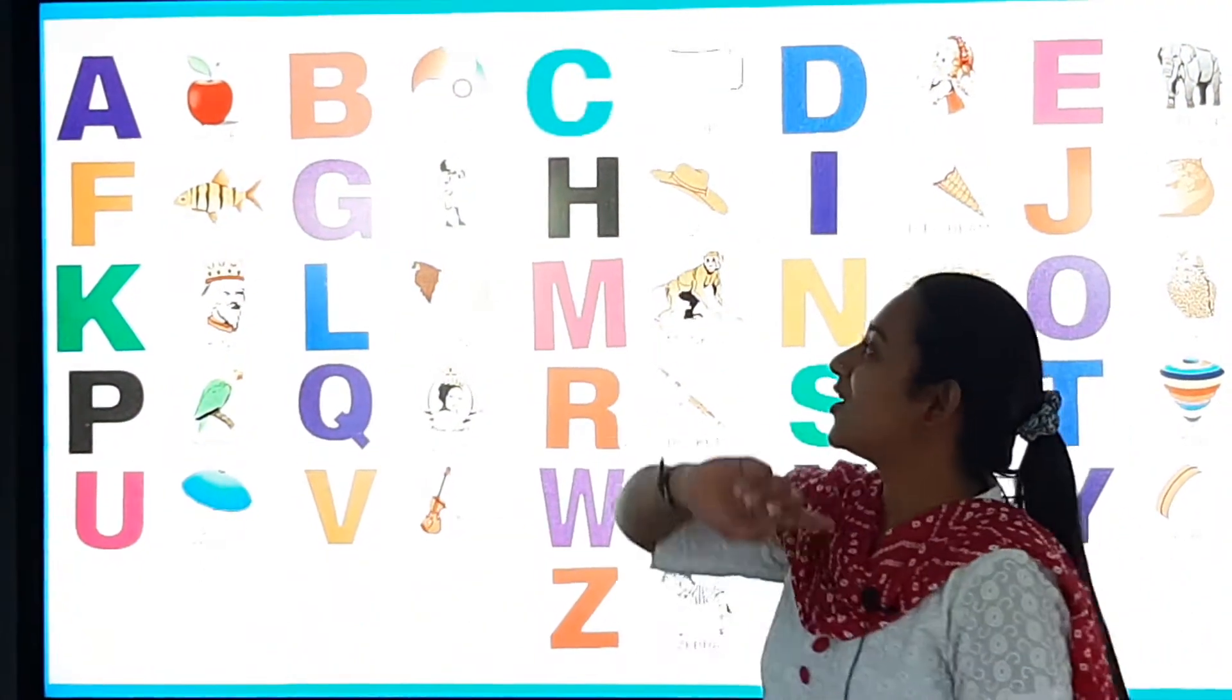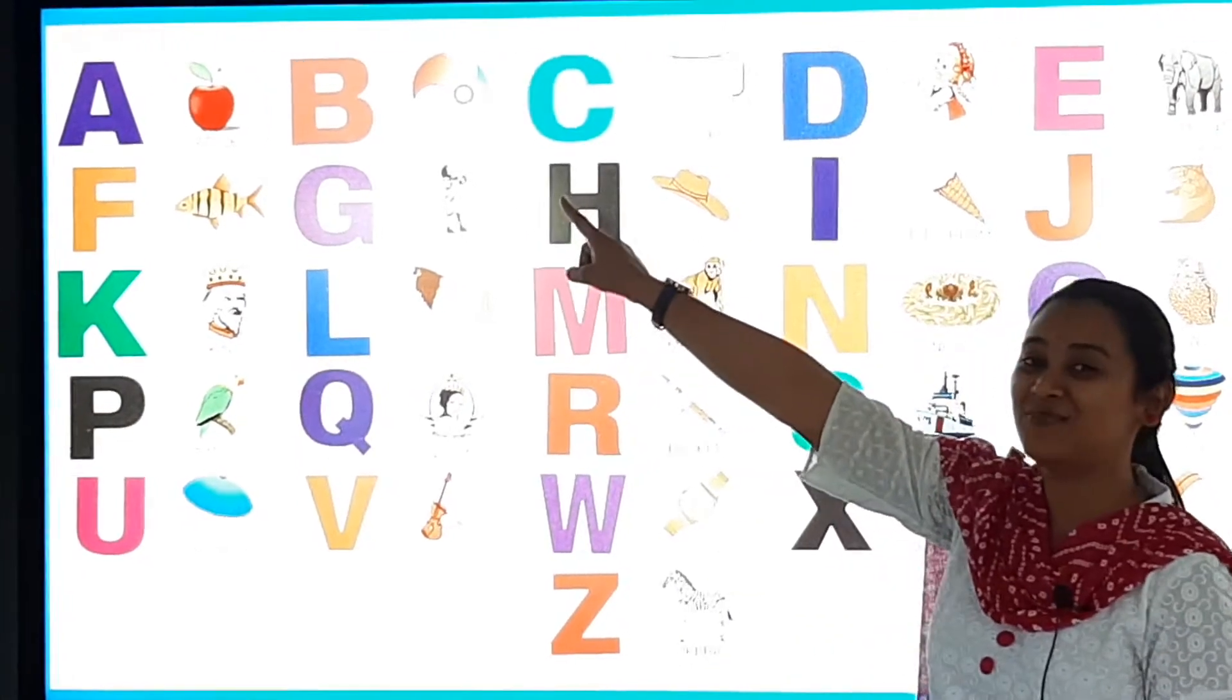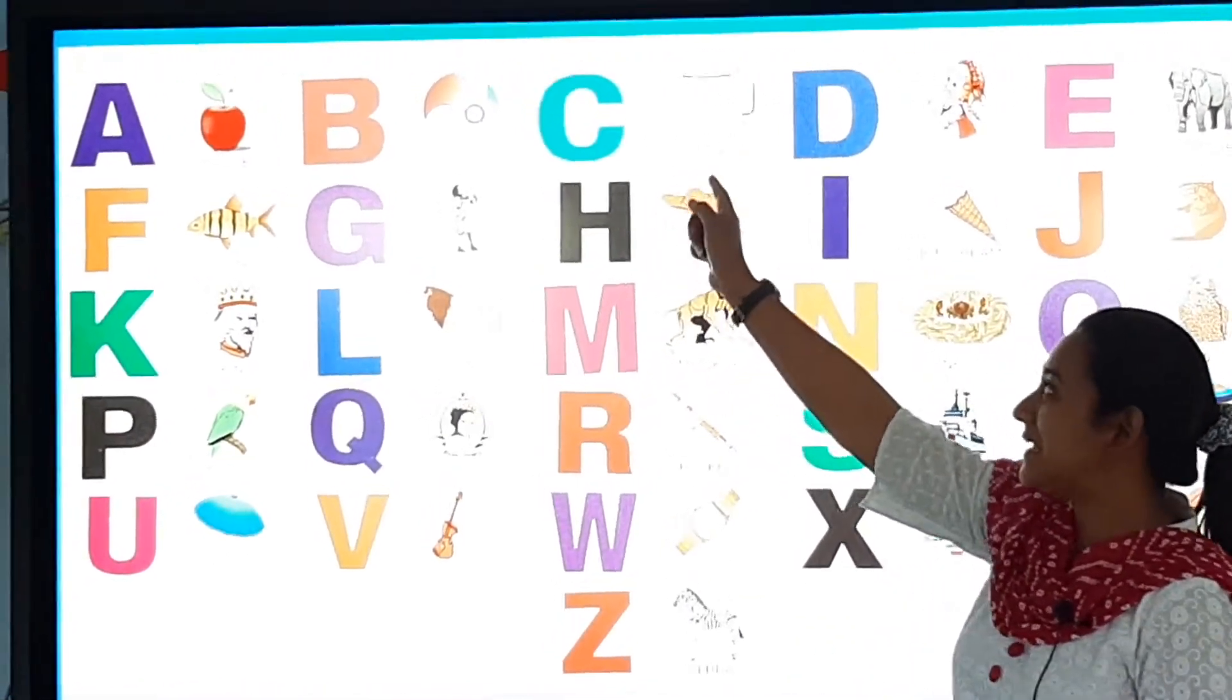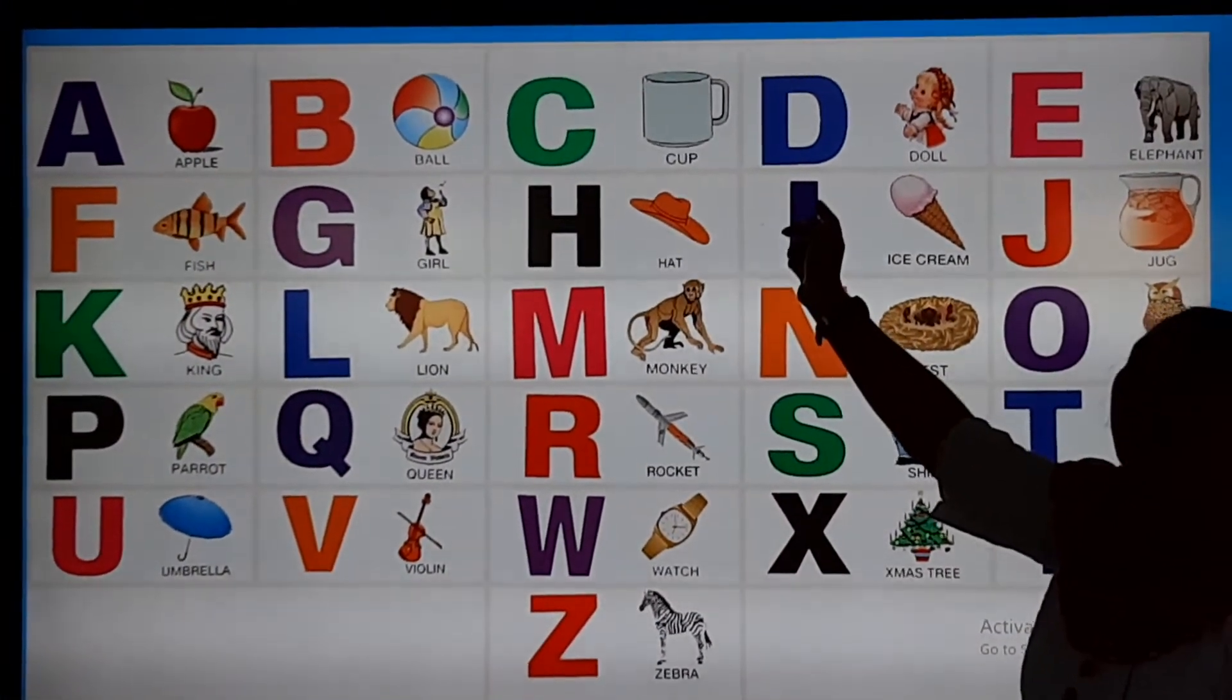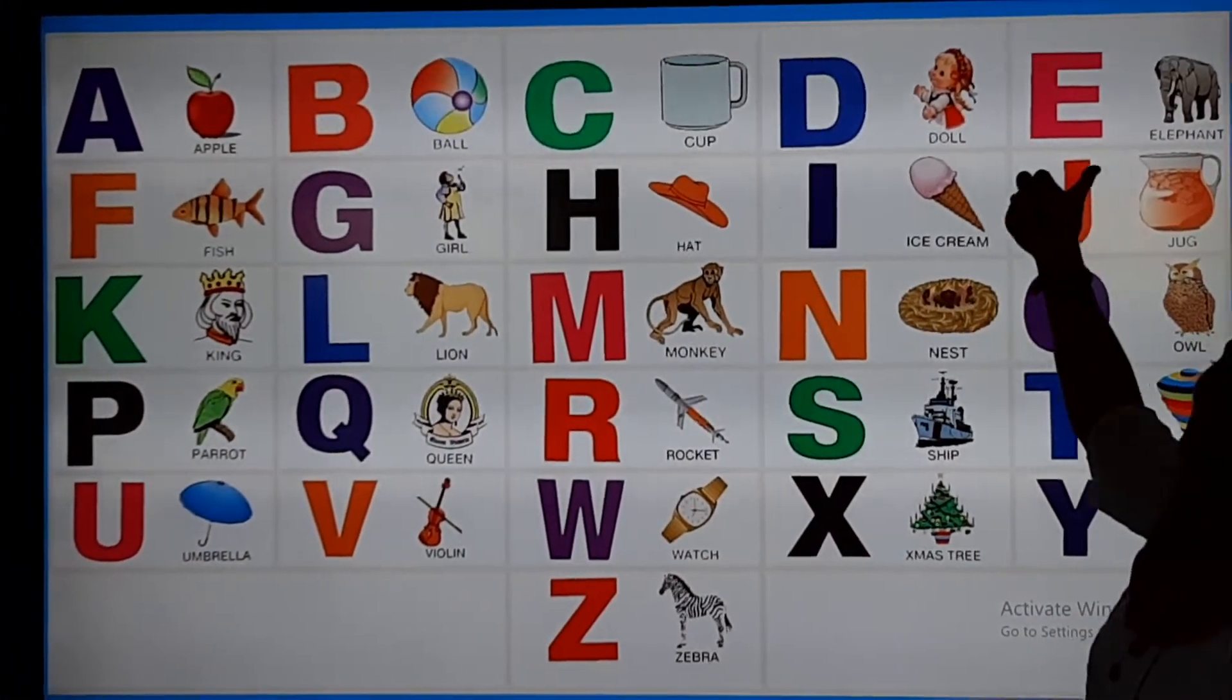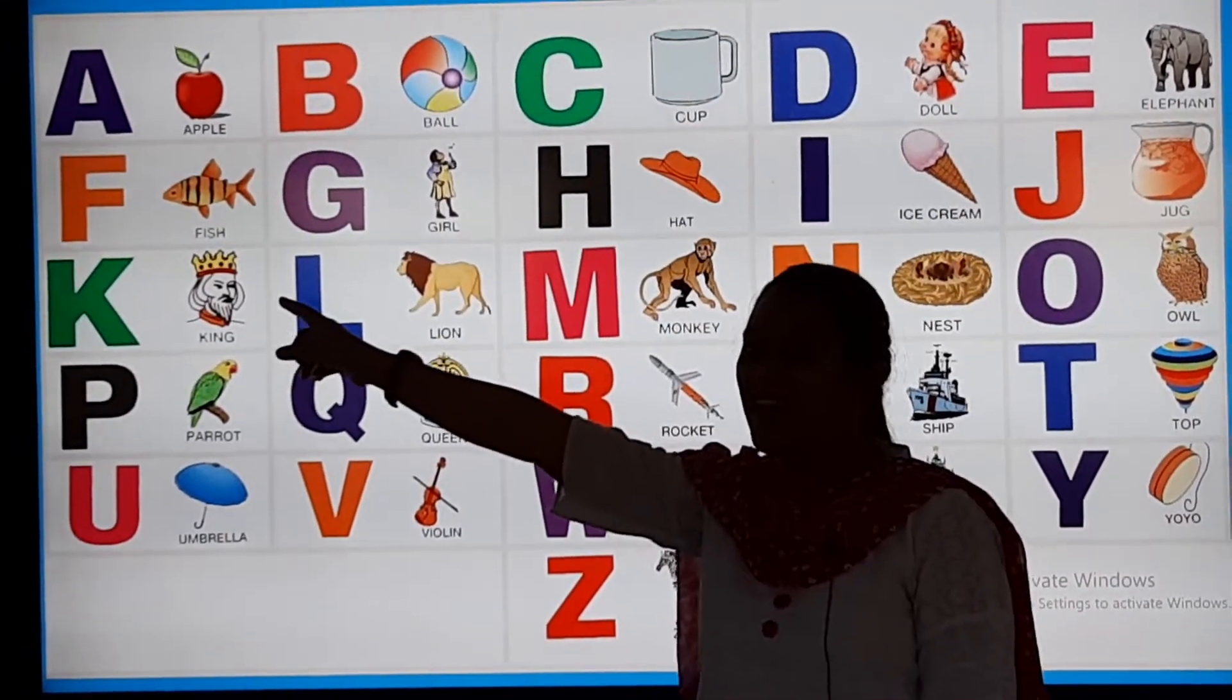So students, here A is for Apple, B is for Ball, C is for Cup, D is for Doll, E is for Elephant.